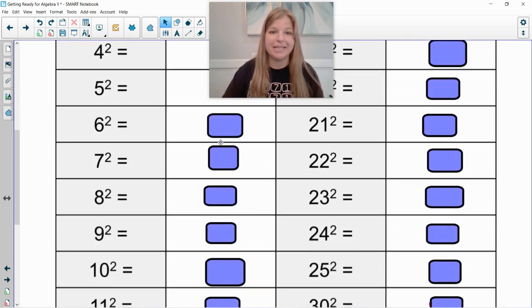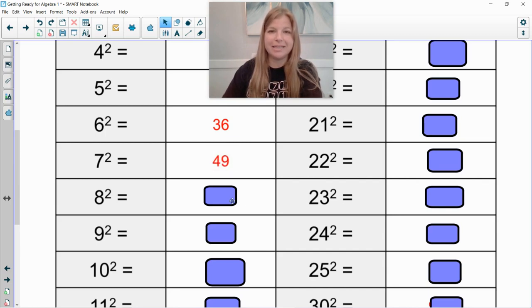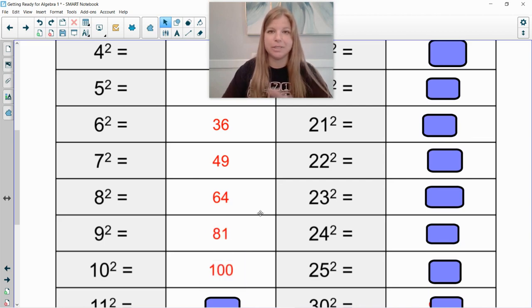Okay next set. 6 squared. 6 times 6 is 36. 7 squared. 7 times 7 is 49. 8 squared. 8 times 8 is 64. 9 squared. 9 times 9 is 81. 10 squared. 10 times 10 is 100. Easy. 36, 49, 64, 81, 100.